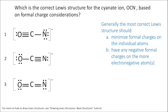Starting with the top structure, structure one: oxygen has six valence electrons and I've assigned it five electrons total, so oxygen has a formal charge of plus one. Carbon has four valence electrons and I've assigned it four electrons (one from each bond), so carbon has a formal charge of zero. Nitrogen has five valence electrons and I've assigned it seven electrons, so nitrogen has a formal charge of negative two.